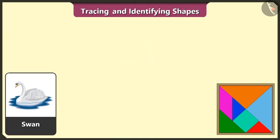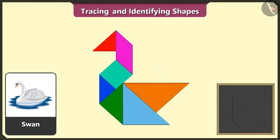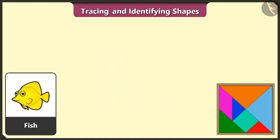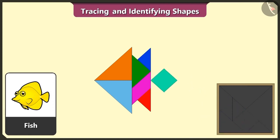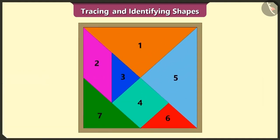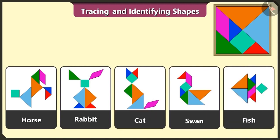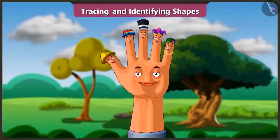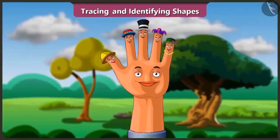This is a swan — we will make a swan using 4 triangles, 1 square, 1 quadrilateral and 1 triangle. Swan is also ready! This is really interesting. This is a fish — let's create a fish using 2 triangles, 1 quadrilateral and 1 triangle, 2 more triangles and 1 square. And we have created a fish! We have finally created a horse, rabbit, cat, swan and a fish using the 7 shapes of the tangram. Today we learned to make figures using tangram shapes in an interesting way. In the next video, we will know about lines and their different types.